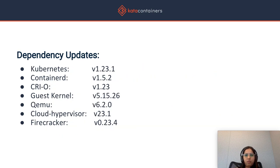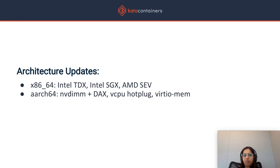This shows all of the dependency versions that the latest Kata version is compatible with. We try to keep up with the latest and greatest tools in the container ecosystem, and this gives a snapshot of the various components that Kata works with. In terms of architecture updates, for the x86 platform we added support for Intel TDX, Intel SGX, as well as AMD SEV. This all ties into our confidential computing use case, where we have enhanced the threat model to make sure the container workload is protected from the host by running inside a hardware-based trusted execution environment.